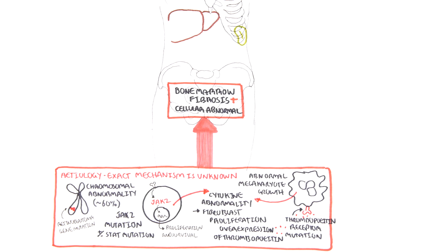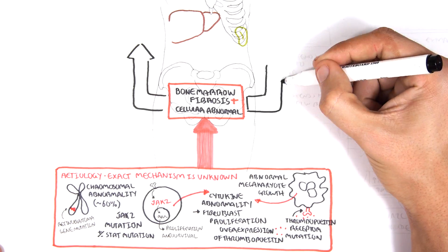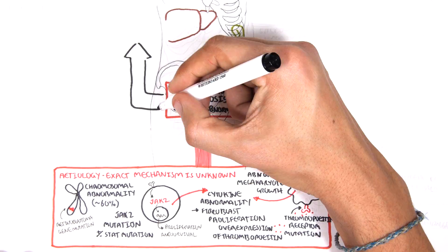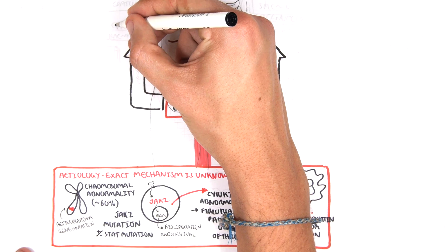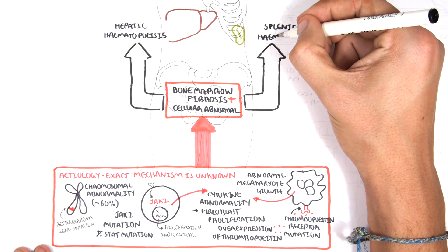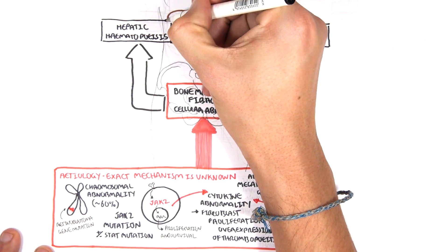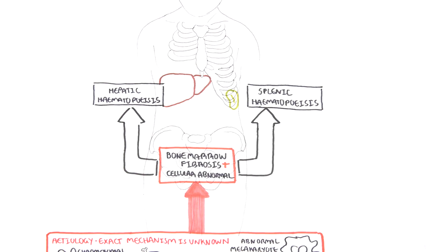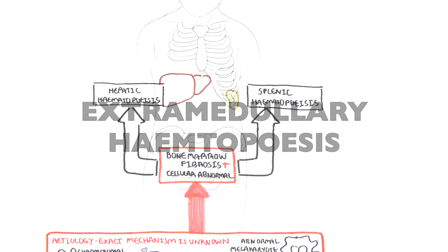Because the bone marrow becomes fibrotic and because of the abnormal cells in the area, the bone marrow is unable to keep up with the production of red blood cells, white blood cells, and platelets. As a result, the hematopoietic cells migrate to other organs. The liver and the spleen take over the role of hematopoiesis. When hematopoiesis occurs outside the bone marrow, this is called extramedullary hematopoiesis.